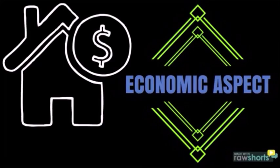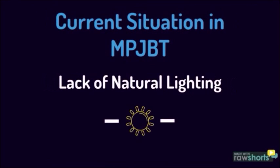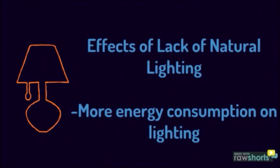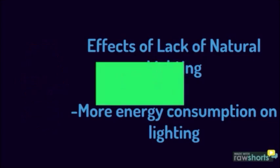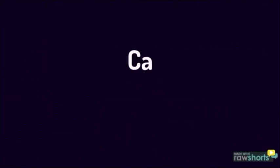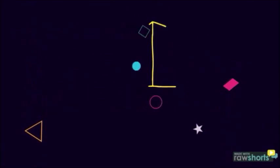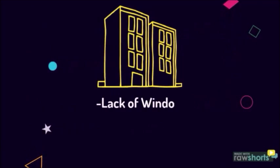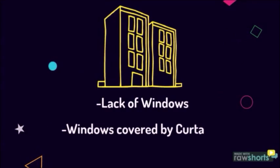Secondly, economic aspect. The current issue in MPJBT is lack of natural lighting. The lack of natural lighting will consume more energy for lighting. This is caused by there not being many windows and the ones that are present are mostly covered by curtains.